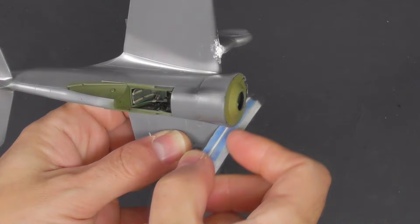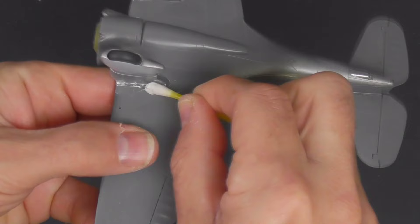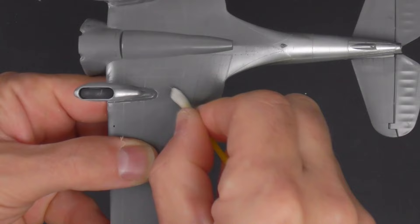Again, alignment is key. I did have a bit of a gap at the front though, so again, Deluxe Perfect Plastic Putty came to the rescue, and that was finished off with a bit of Mr. Surfacer as well.